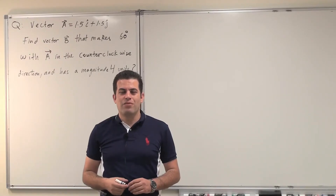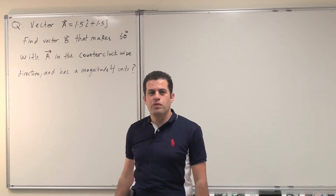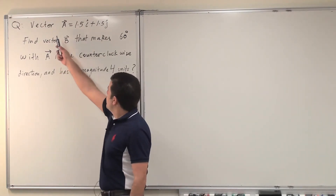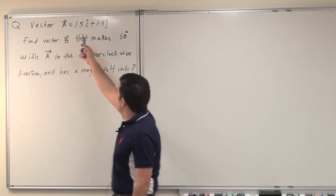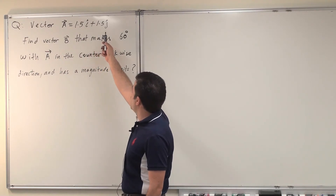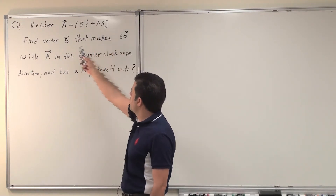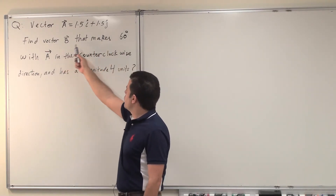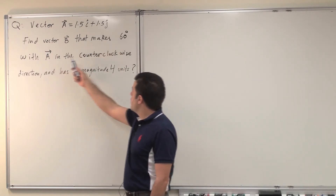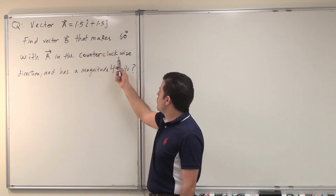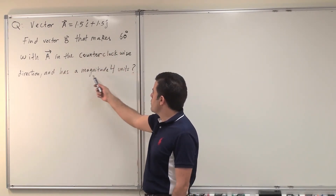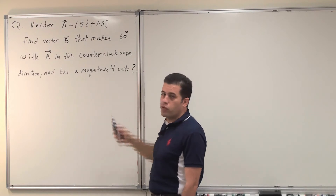As-salamu alaykum. Today we're solving questions from chapter 3. The question reads: vector A equals 1.5i hat plus 1.5j hat. Find vector B that makes 60 degrees with A in the counterclockwise direction and has a magnitude of 4 units.